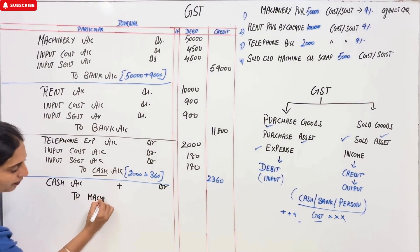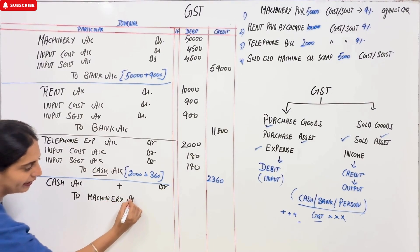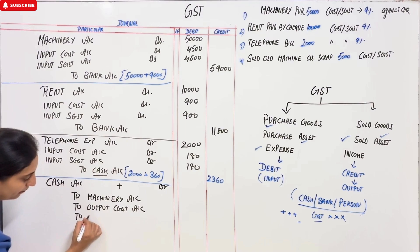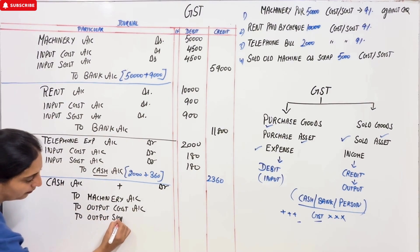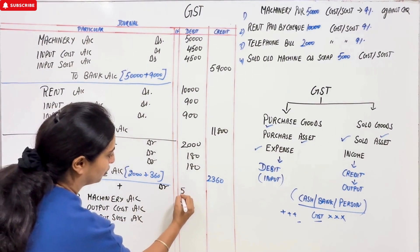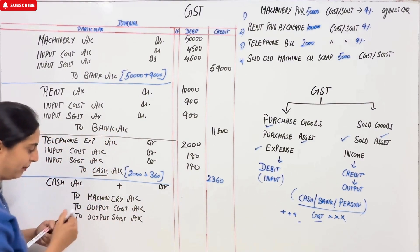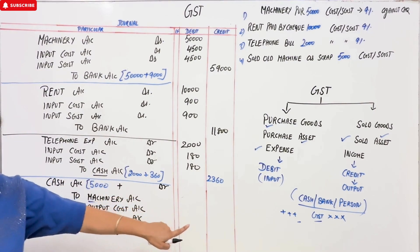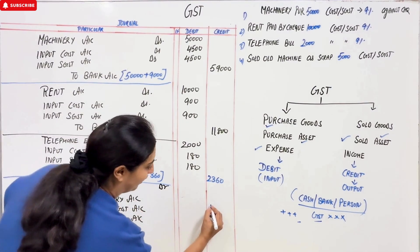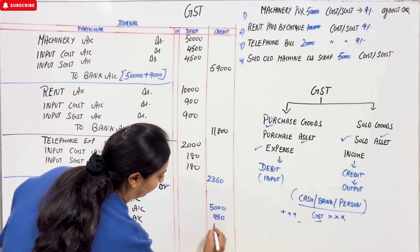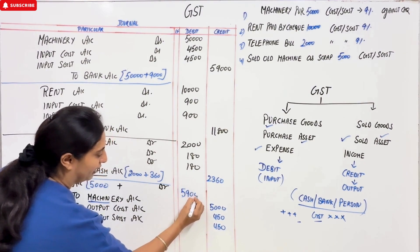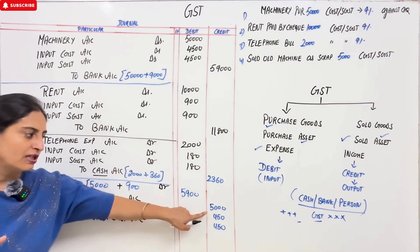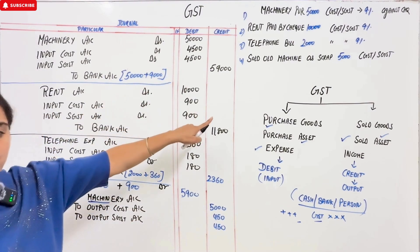The entry is: Cash Account — Debit (total amount), To Machinery Account, To Output CGST Account, To Output SGST Account. Machinery was sold for Rs. 5,000. Tax at 9% = Rs. 450 for CGST and Rs. 450 for SGST. Total tax = Rs. 900. So Cash received = Rs. 5,000 + Rs. 900 = Rs. 5,900. This completes our first four entries.